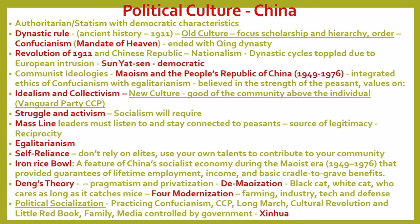China is also an authoritarian statist system with some democratic characteristics, similar to Russia. Their history, much like Russia, features a desire for a leader to protect citizens under dynastic rule — the Chinese version of monarchies. These dynasties embraced cultural norms like scholarship, hierarchy, and order, largely based in Confucianism. Confucius emphasized old culture, scholarship, hierarchy, order, and the ruler's right to rule — the mandate of heaven — as long as there is a reciprocal relationship where the ruler protects citizens.